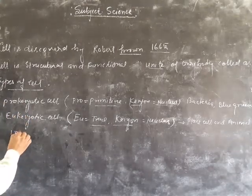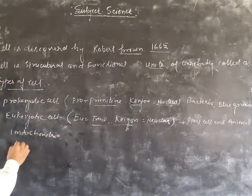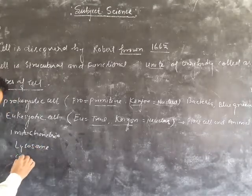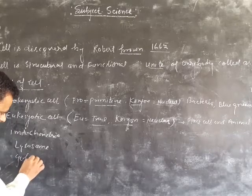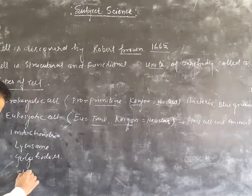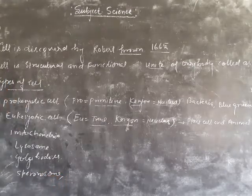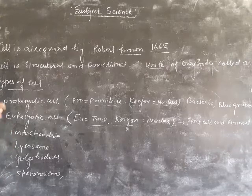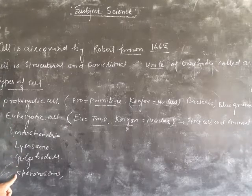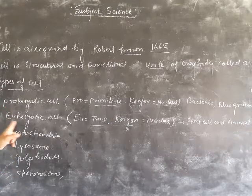The prokaryotic cell are present in bacteria, blue-green algae, and mycoplasma. Eukaryotic cells are present in eukaryotic cell but not present in prokaryotic cell. Prokaryotic cell can be — mitochondria, lysosome, and Golgi body — are present in eukaryotic cell but absent in prokaryotic cell.